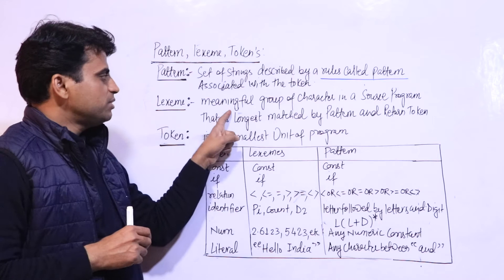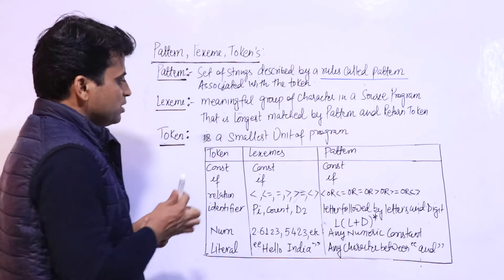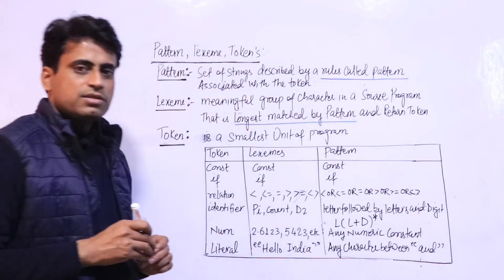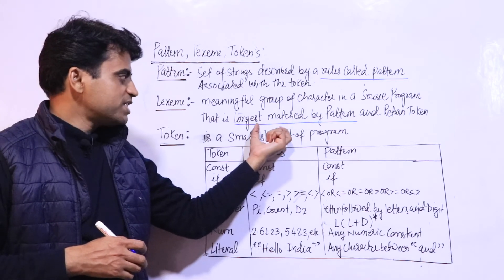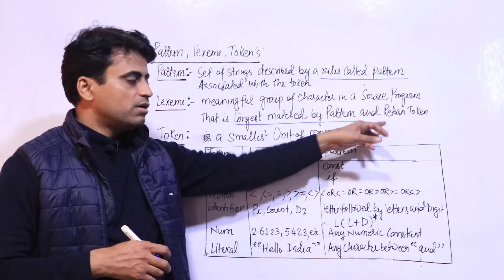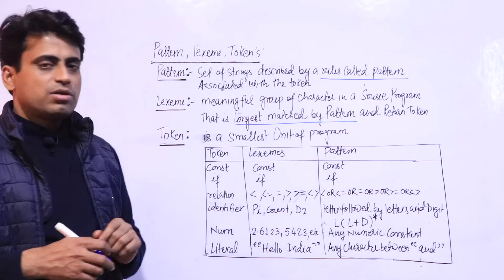And lexeme, lexeme is a meaningful group of characters in a source program that is longest matched by a pattern. It is called lexeme and it is written token. And token is a smallest unit of program.